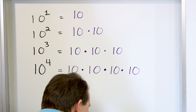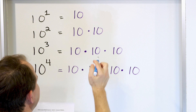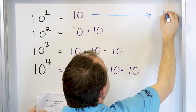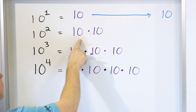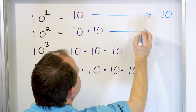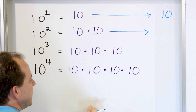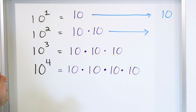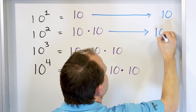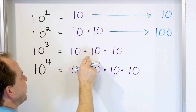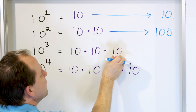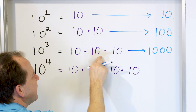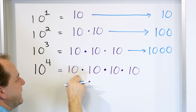Let's crank through the actual values. Ten raised to the power of one is just ten. Ten to the power of two — what is ten times ten? If you do the long multiplication, you get one hundred. When you take ten times ten, that gives you a hundred. If we multiply by ten again, you get one thousand. Three tens multiplied together give us a thousand.